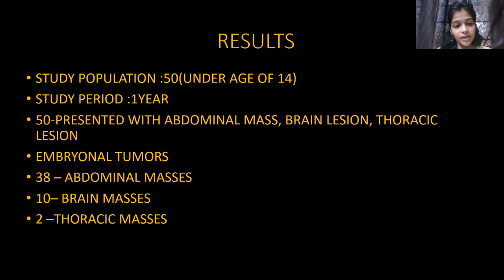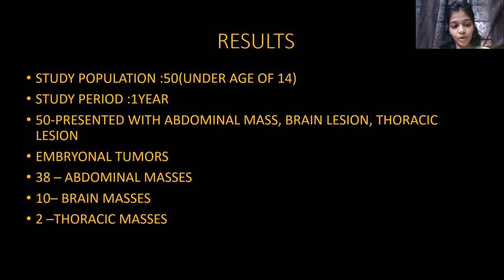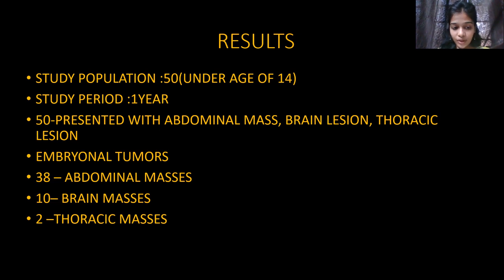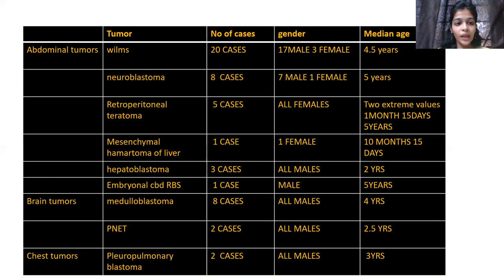The study population was 50 children under the age of 14, over a study period of one year. Out of the 50 children diagnosed with embryonal tumours, 38 presented with abdominal masses, 10 presented with brain masses, and 9 presented with thoracic masses.